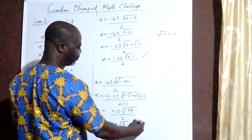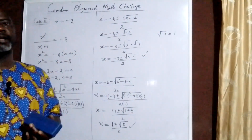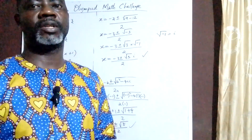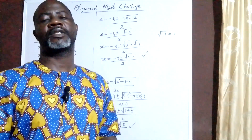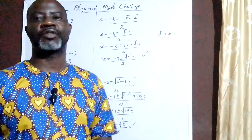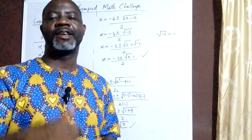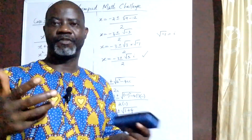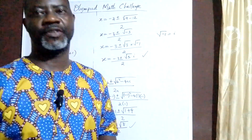So there are four different solutions to that Canadian Olympiad mathematics problem. If today is your first time coming across my channel, I encourage you to subscribe. If you are a returning subscriber, please give me a thumbs up, leave your beautiful comment in the comment section. See you in my next video. Thank you.